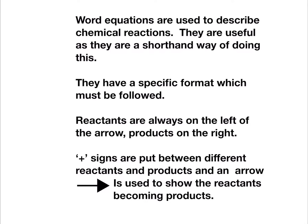Reactants are always on the left hand side of the arrow and products are always on the right. We always put a plus symbol between the different reactants or products and we use an arrow to show that the reactants are becoming the products.